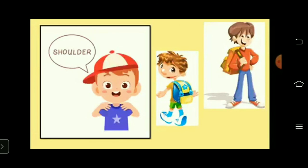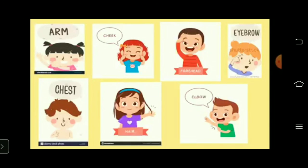Shoulders — the shoulder helps us to carry loads. Other different parts are arm, cheek, forehead, eyebrow, chest, hair, and elbow.